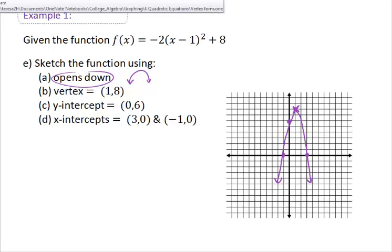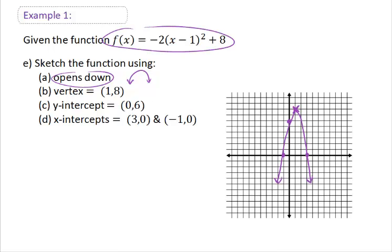So last time we ended up with the graph and the important details of this function here where it opens down, our vertex is at (1,8), our y-intercept is at (0,6), and we have two x-intercepts at (3,0) and (-1,0).